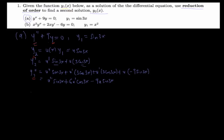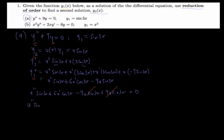Making the substitution, we have: u''·sin(3x) + 6u'·cos(3x) − 9u·sin(3x) + 9·u·sin(3x) = 0. We observe that the −9u·sin(3x) and +9u·sin(3x) terms cancel out, leaving us with: u''·sin(3x) + 6u'·cos(3x) = 0.